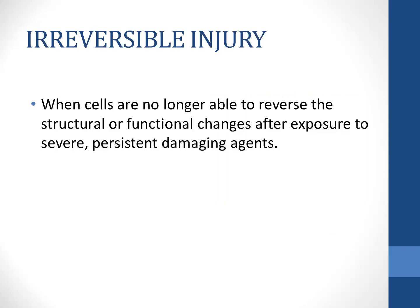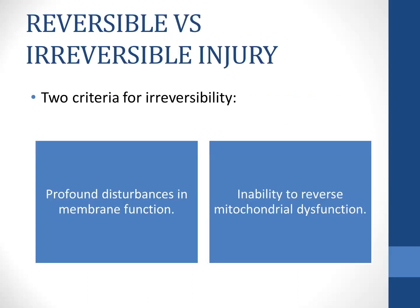Irreversible injury occurs when cells are no longer able to reverse the structural and functional changes after exposure to severe and persistent damaging stimuli. There are two criteria for irreversibility: profound disturbances in membrane function because ion transport is affected, and inability to reverse the mitochondrial dysfunction.